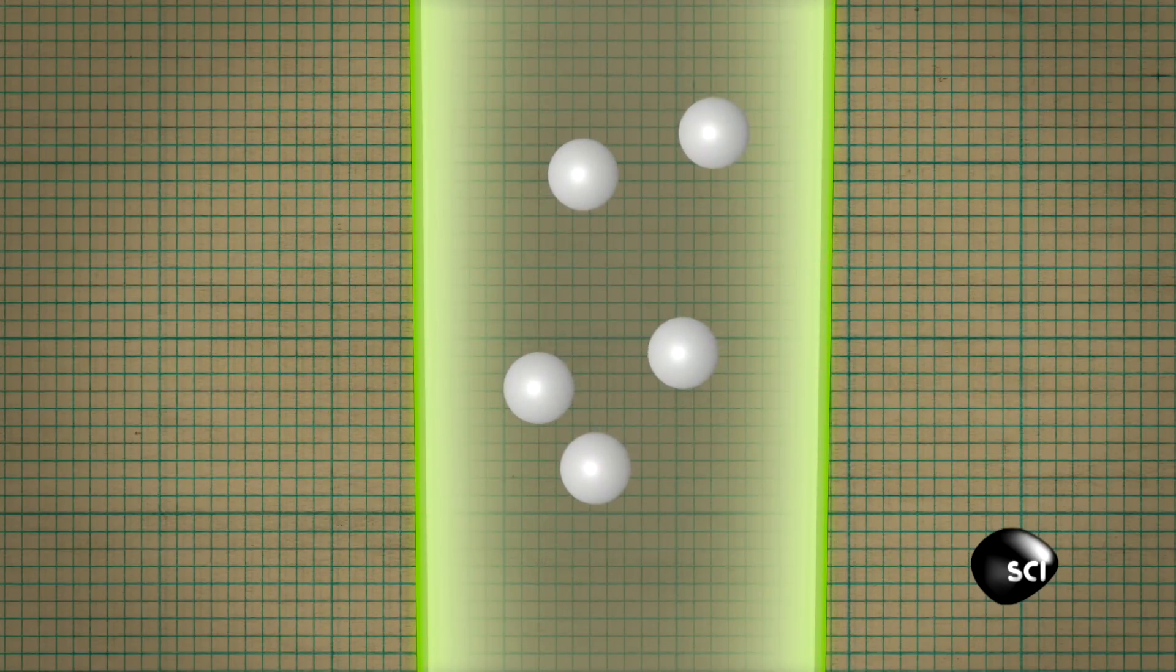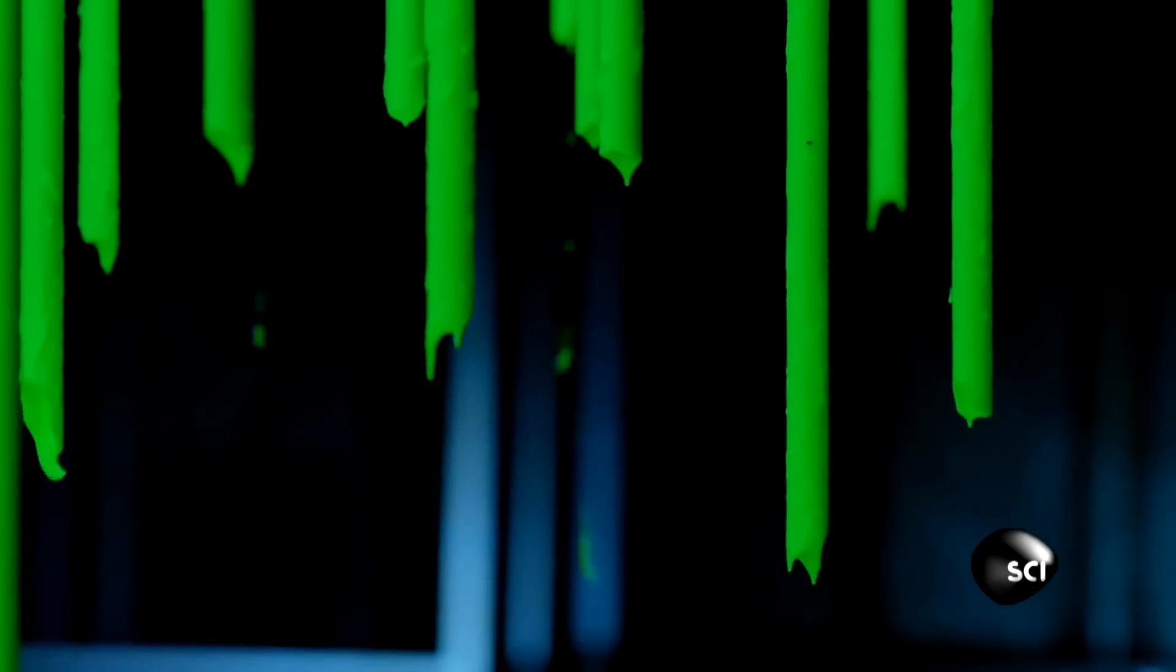And this is the light that we can see being given off, because it's now low enough energy for us to detect with our eyes. And that's how you use lights you can't see to make light you just can't miss.